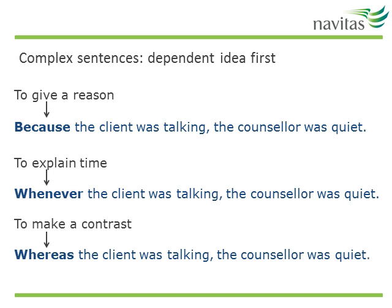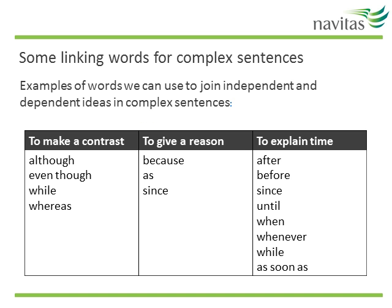Now take a look at these examples and notice how they are different. In these examples the dependent idea comes first — in other words, the sentence has been flipped around. When the dependent idea comes first, you need to use a comma to separate the two parts of the sentence. There are lots of different linking words you can use in complex sentences with different purposes. To make a contrast: although, while, whereas. To give a reason: because, as, or since. To explain time: after, until, whenever, while.